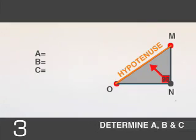Here is our hypotenuse. Therefore C is equal to OM, B is equal to NM, and A is equal to ON.